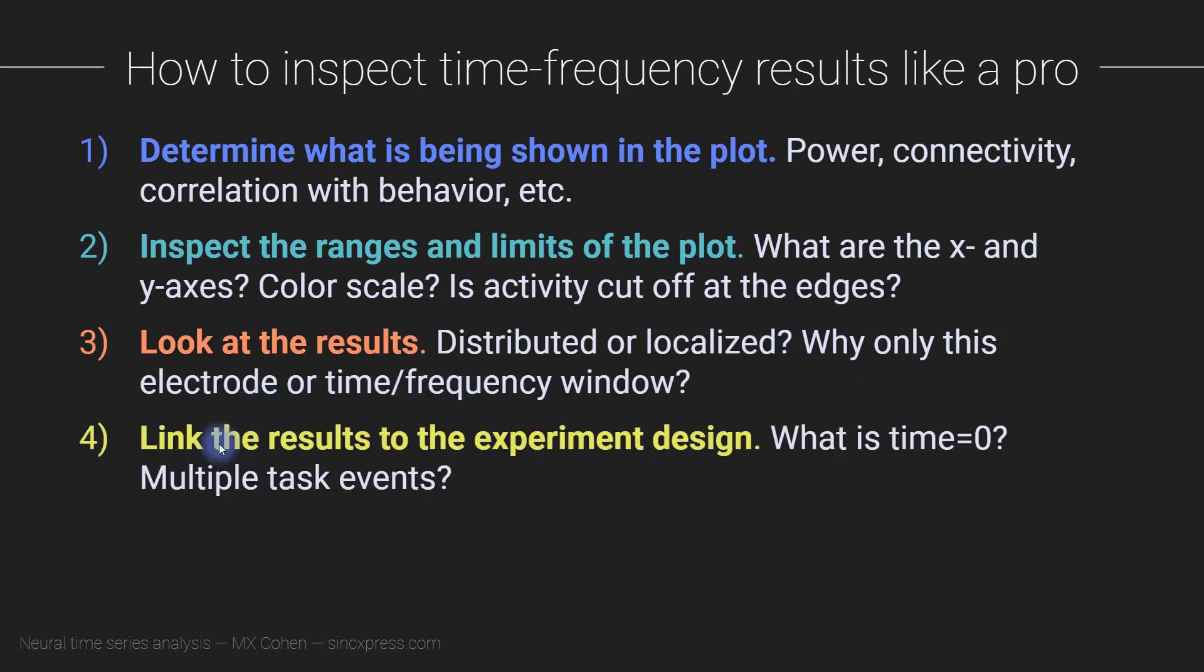And then the fourth step is to link the results to the experiment design. So what was happening in the experiment? What was the research participant or the experimental animal or whatever, wherever the data come from? What was that organism doing at the time when the data were being measured? And how do you see that represented in the plots? For a typical trial-based experiment design, there's going to be a time equals zero.